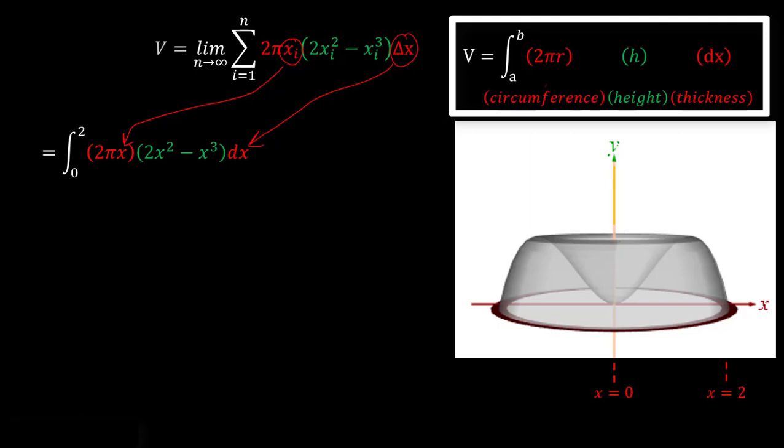But back to our integral here, we can go ahead and evaluate this now. So we can take this 2 pi and bring it outside of our integral and simplify things a bit. We can go ahead and distribute this x into both of these terms, and we get this somewhat simplified integral.